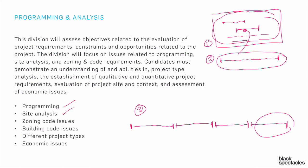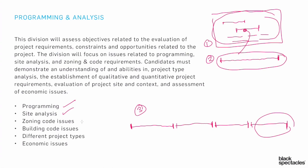The issues we're going to be talking about are programming and site analysis. We've got a site to think about, and the owner has told us what they need — either they've given us a program or we're working with them on one — so we have enough information to actually design something. What other outside influences come into play? Clearly zoning code issues and building code issues.